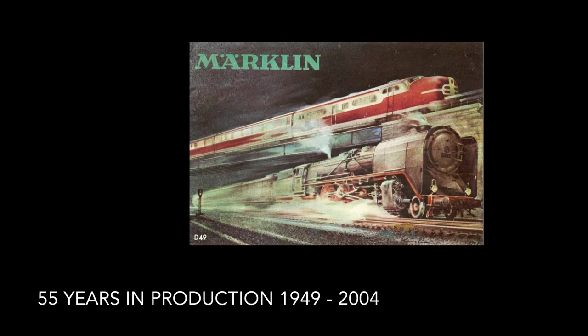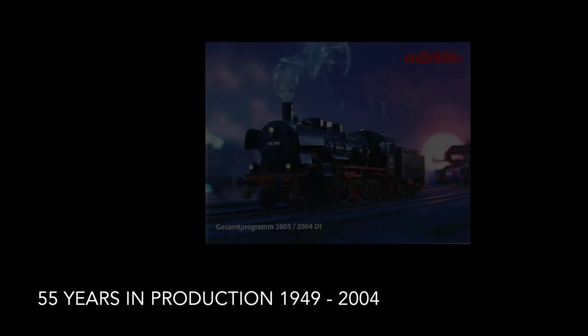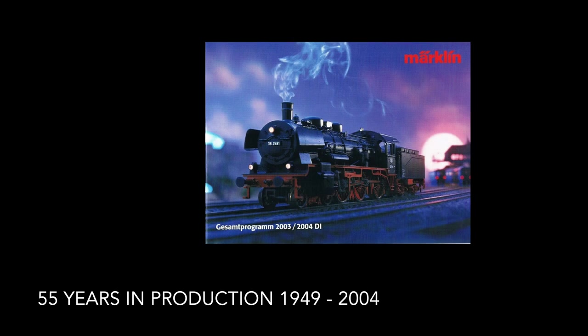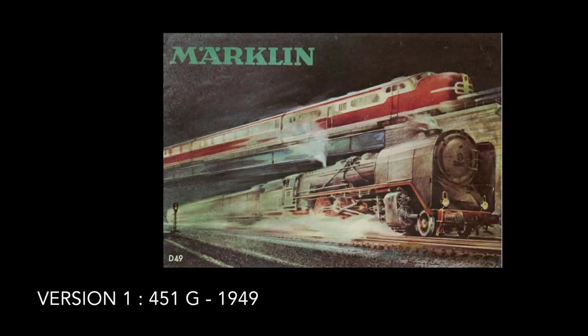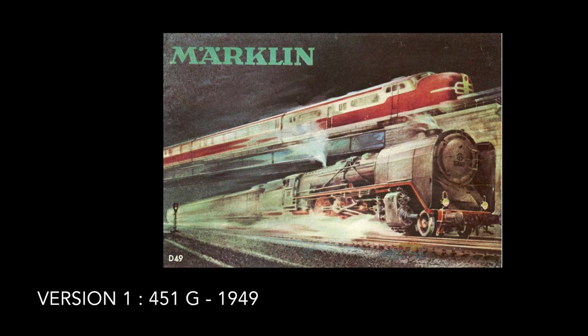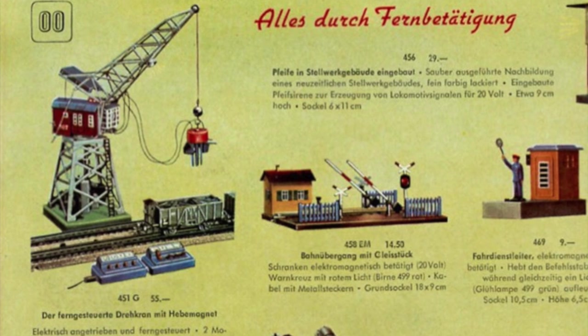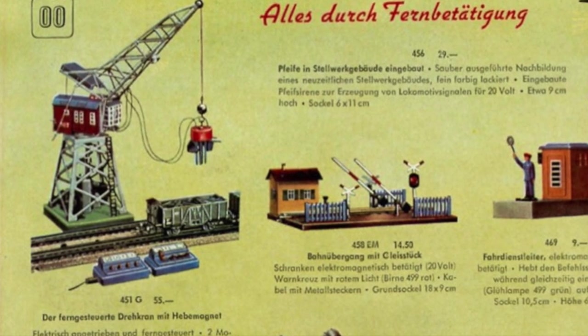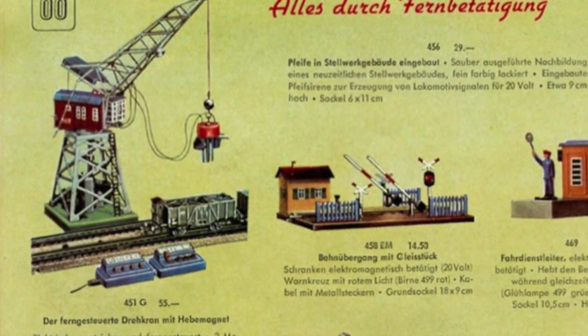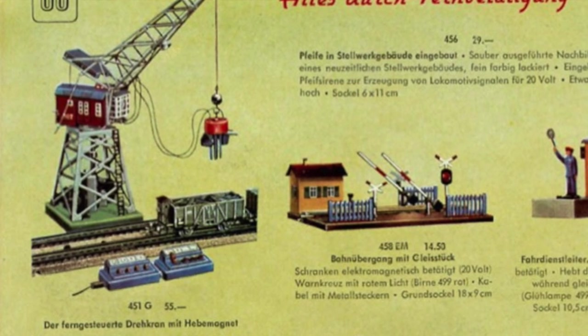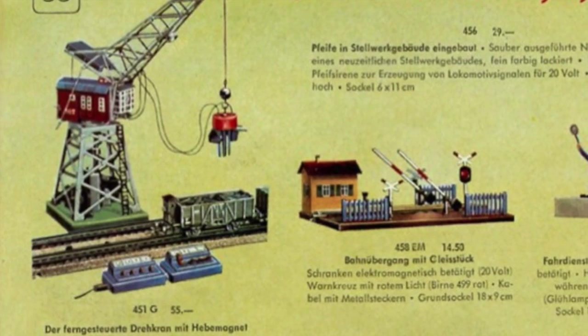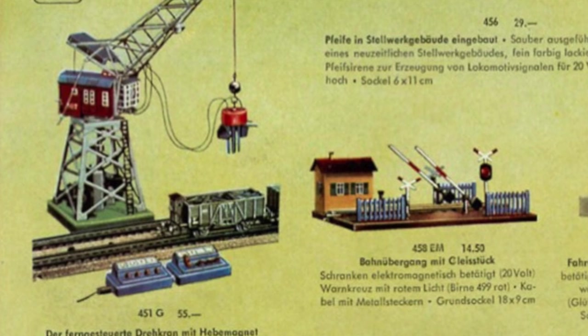Let's start with a bit of history. This classic accessory was produced by Merklin for a period of over 55 years, during which it remained virtually unchanged. The first version came out in 1949 under model number 451G. The lifting, turning, the magnet and lighting were already remote controlled. The jib could be raised or lowered using a hand crank on the back of the cabin.